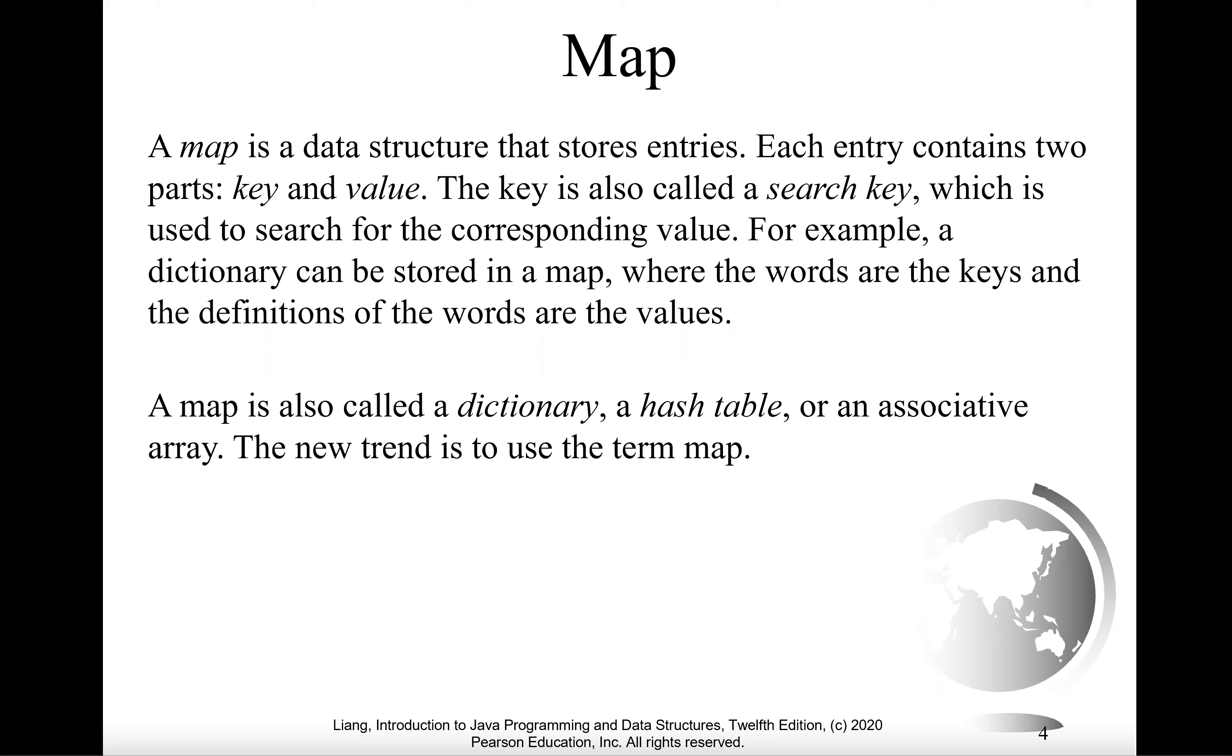Please recall that a map is a data structure that stores entries. Each entry contains two parts: key and value. The key is also called a search key, which is used to search for the corresponding value. For example, a dictionary can be stored in a map where the words are the keys and the definitions of the words are the values.